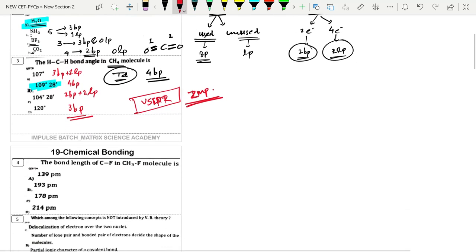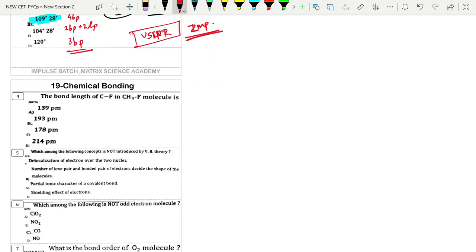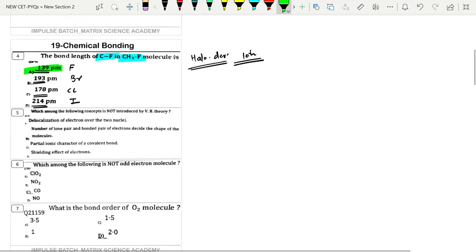Next one: the bond length of C-M in CH3-M. This question is actually from halogen derivatives, this is 12th standard lesson number 10. The table given shows 139 picometers is the least bond length for fluorine, then 178 for Cl, 193 for Br, and 214 for iodine. So the correct option becomes 139 picometer.